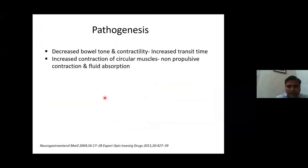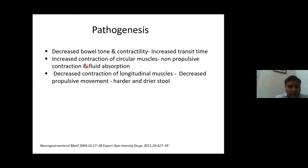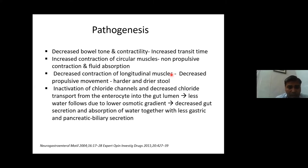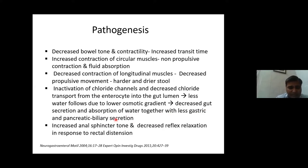Generally, opiates decrease bowel tone and contractility, increasing transit time. There is increased contraction of circular muscles — producing non-propulsive contractions and increased fluid absorption — while decreased contraction of longitudinal muscles leads to reduced forward propulsion, resulting in harder and drier stool. Chloride channels in the small intestine are inactivated, decreasing gut secretion. Combined with less gastric, pancreatic, and biliary secretions and increased sphincter tone, this leads to rectal distension.